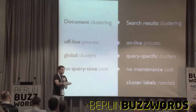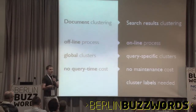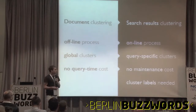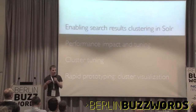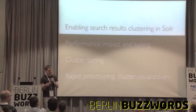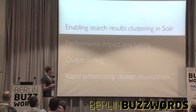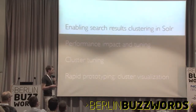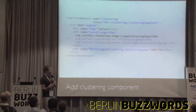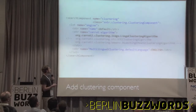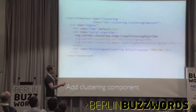Another thing about search results clustering algorithms is that it's good to have an algorithm that produces meaningful labels for the clusters so you can show them to users. Search results clustering is implemented as a standard Solr component, so all you need to do is add it to your Solr config. Inside the config, you can define a number of what we call clustering engines — an engine is essentially a clustering algorithm with some configuration.